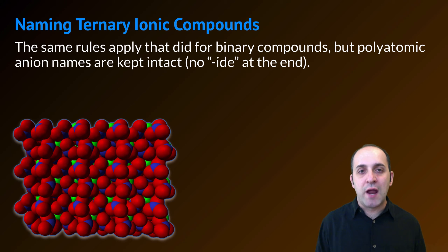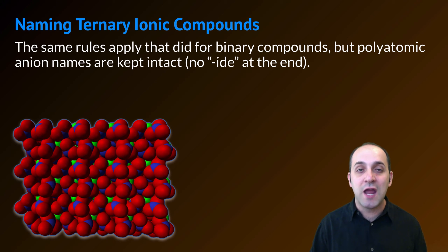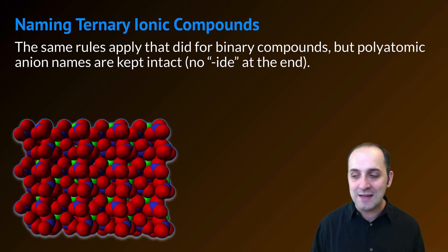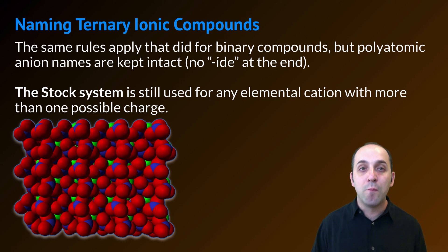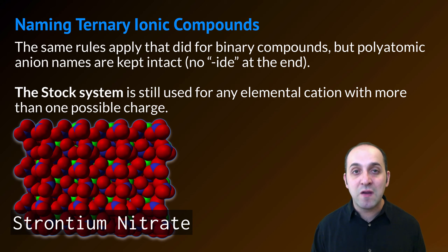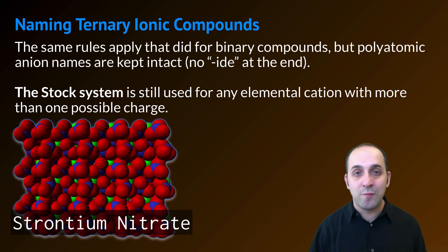When we want to name ternary ionic compounds, our rules are very similar to the rules we used for binary compounds. The only difference is that polyatomic anion names are kept intact — we do not change the end of the name to -ide. We absolutely will still use the stock system when we have to, any time we have a cation with more than one possible charge. You can see that we use these rules in naming strontium nitrate — nitrate comes at the end, but we didn't change its name; we just kept it intact.